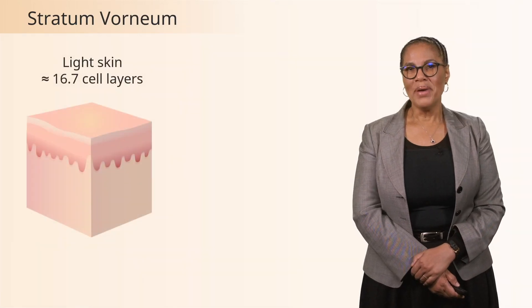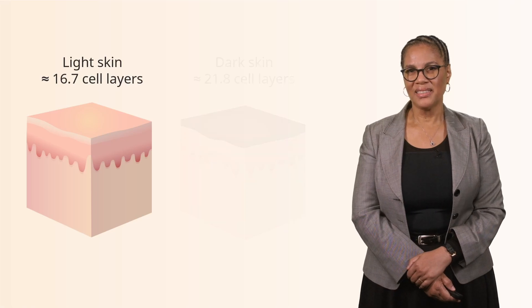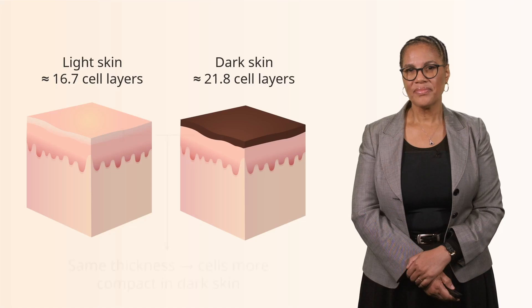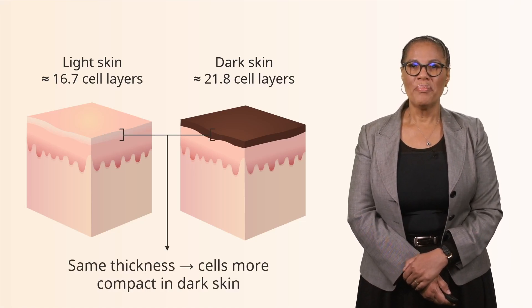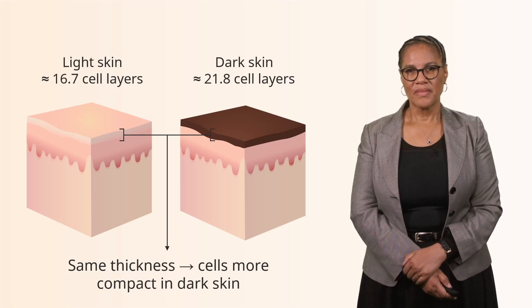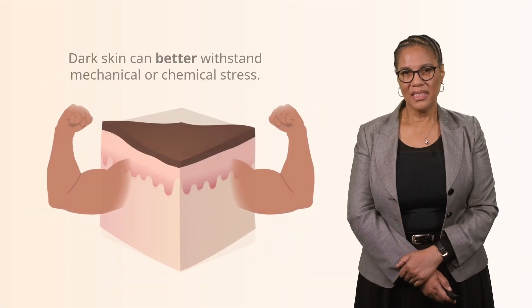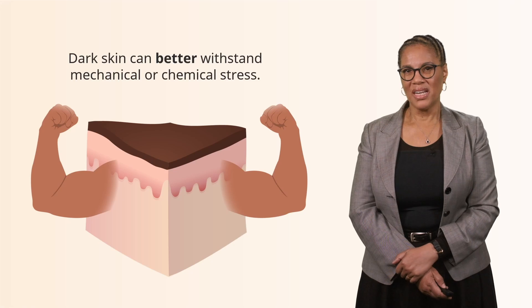If you look at the stratum corneum as part of the epidermis, as we have spoken about in our previous lectures, in light skin or melanin-poor skin, there are about 17 cell layers. However, dark skin has about 22 cell layers — same thickness, but the cells are more compact in dark skin. Because of these thicker layers, dark skin is stronger when exposed to mechanical or chemical stress.